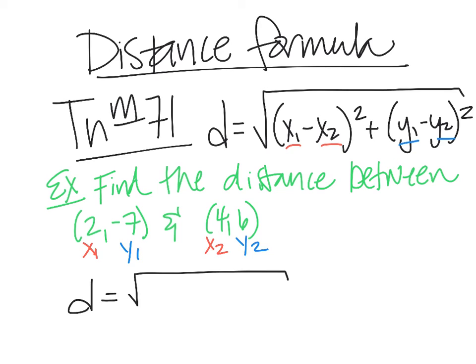If I go 2 minus 4, I'm going to get a negative. If I go 4 minus 2, I'm going to get a positive. And I like positives better than negatives, so I'm going to go 4 minus 2. Plus, and then this time, let's see, negative 7 minus 6, or 6 minus negative 7. I prefer 6 minus negative 7, so I'm going to go 6 minus negative 7.